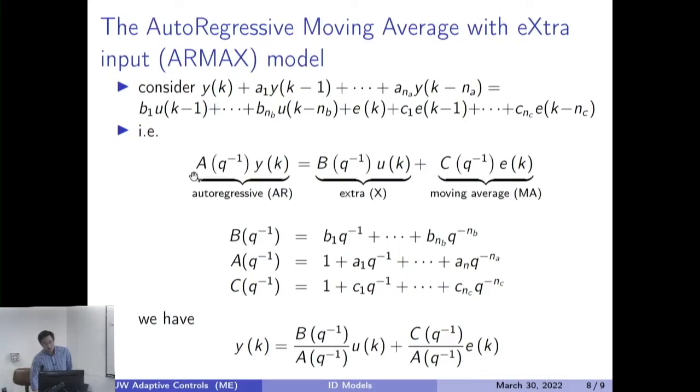And in equations with shift operators, the left-hand side is again A operated on Y. The first part is B operated on U. The last part is this new polynomial, C operated on E. If we use these notations, then YK by division of A Q inverse, YK is going to be B over A operated on U plus C over A operated on E. And then, this is called autoregressive moving average with extra input.